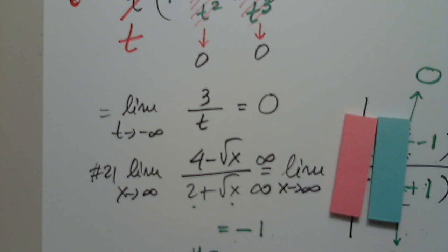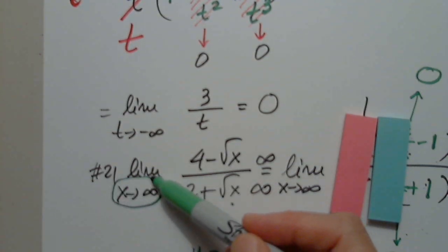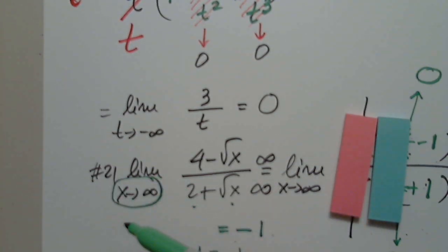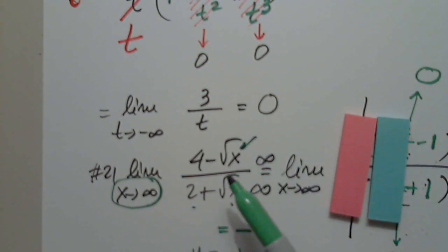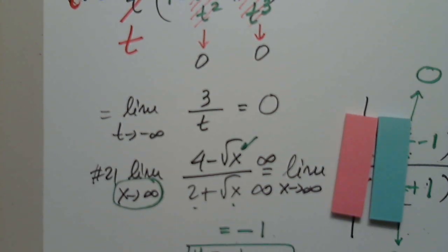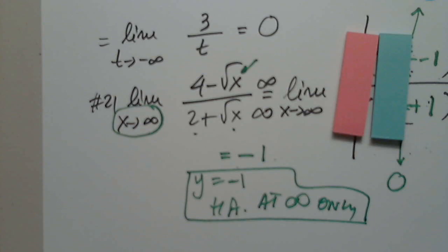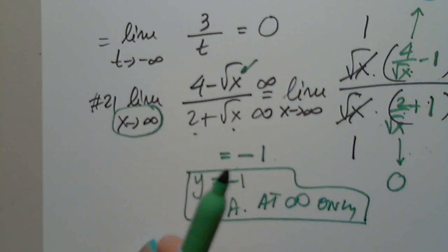The limit is negative 1, which means y equals negative 1 is a horizontal asymptote. But here I have to specify that it is at infinity only, because I cannot plug in negative infinity under the square root. So unlike the rational function case, here I must specify: y equals negative 1 is a horizontal asymptote at infinity only.